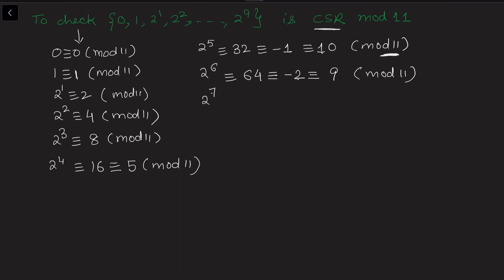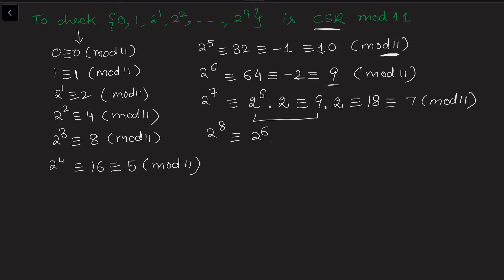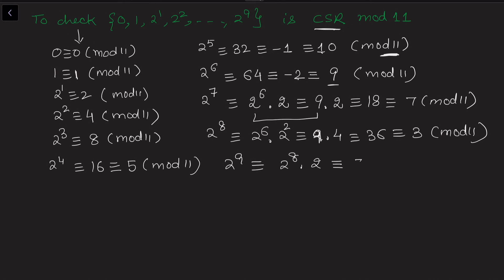For 2⁷: write it as 2⁶ × 2 ≡ 9 × 2 = 18 ≡ 7 (mod 11). For 2⁸: write it as 2⁶ × 2² ≡ 9 × 4 = 36 ≡ 3 (mod 11), since 36 − 3 = 33 is divisible by 11. For 2⁹: write it as 2⁸ × 2 ≡ 3 × 2 = 6 ≡ 6 (mod 11).